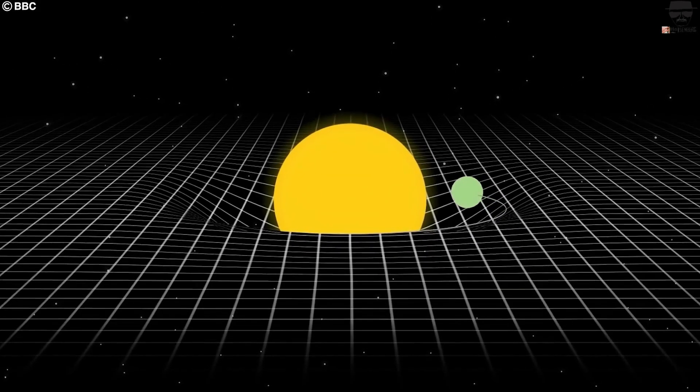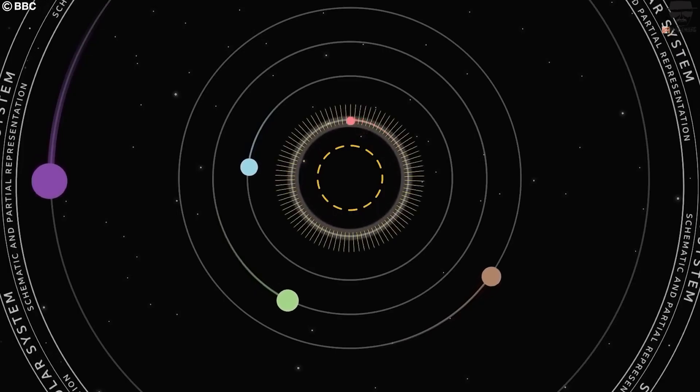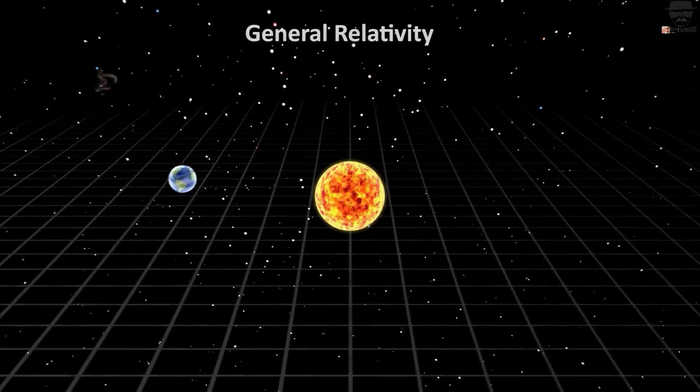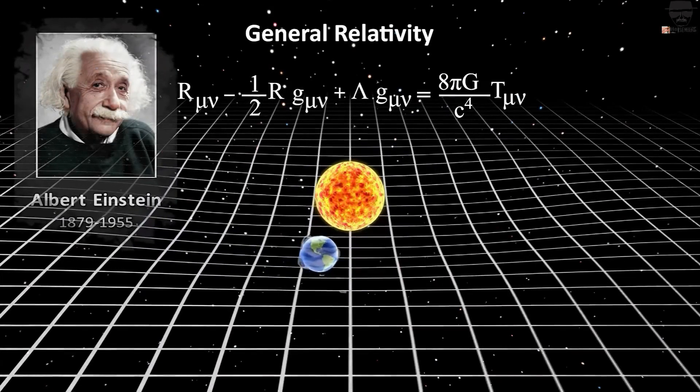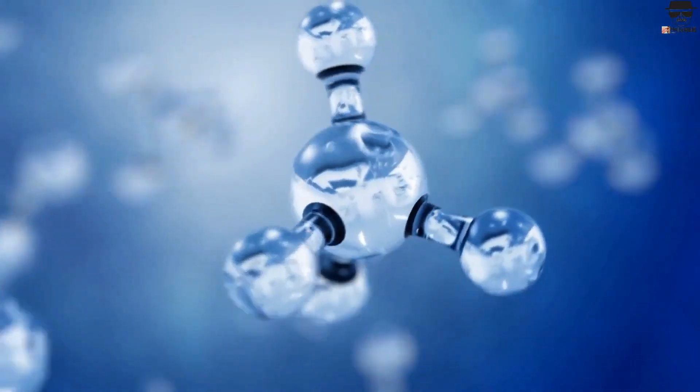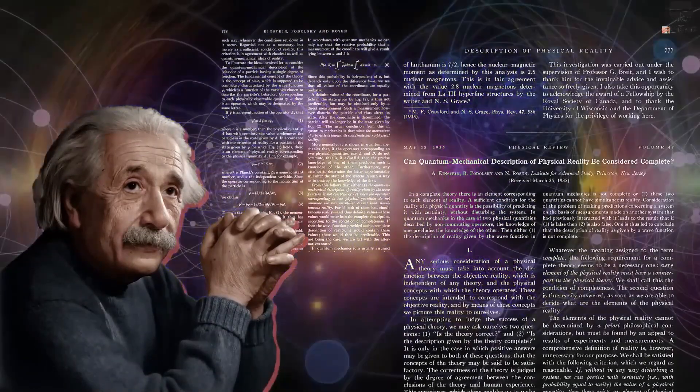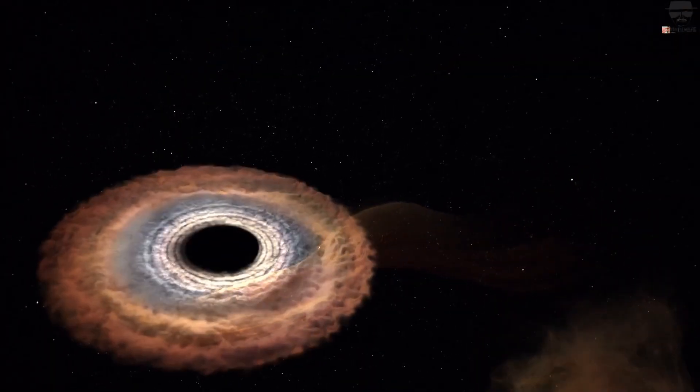The more mass you place into a small volume of space, the stronger the gravitational pull gets. According to Einstein's general theory of relativity, there's an astrophysical limit to how dense something can get and still remain a macroscopic three-dimensional object. Exceed that critical value and you're destined to become a black hole.